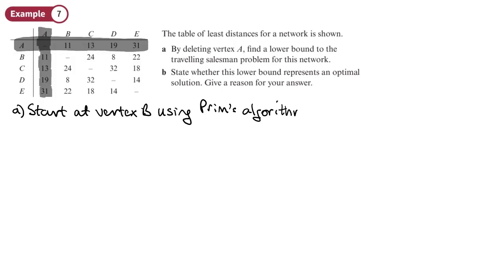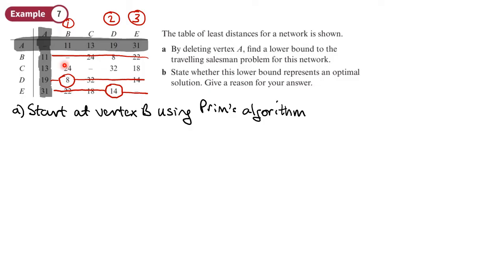Starting at vertex B labelled as 1, we cross out row B and look at column B for the lowest weight, which is D. So cross out D, labelled 2. Looking at the lowest weight in either column B or D, that's 14, so we cross out that row and label E as 3. Looking for the lowest weight in those columns, that's 18, so C is labelled 4.